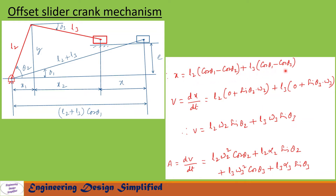To find the velocity of the slider we need to differentiate the displacement equation with respect to time. So v = dx/dt. Since theta1 is constant, its derivative is zero. Differentiating −cos(theta2) gives +sin(theta2)·omega2, and similarly for l3 we get +sin(theta3)·omega3. After simplification, the velocity of the slider is: v = l2·omega2·sin(theta2) + l3·omega3·sin(theta3).